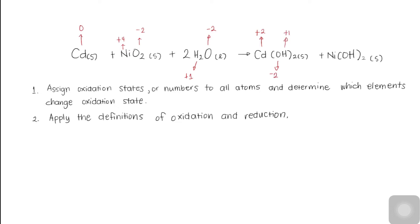Oxygen will always carry negative two as its oxidation state, and hydrogen will always have positive one. Now moving on to the products: cadmium positive two, oxygen negative two, hydrogen positive one, nickel positive two, oxygen negative two, and hydrogen positive one. Looking at all this, we can notice that some species have oxidation states that remain the same on both the reactant and product sides, while some have changed.